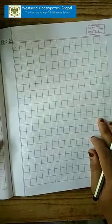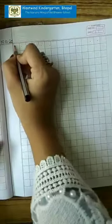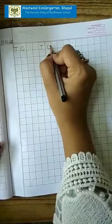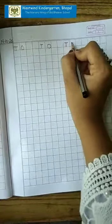Now, open your maths notebook. Put a date over here. Now, over here what we are going to write? Yes. T and O for tens and ones. Leaving the two boxes, we will make T and O again.